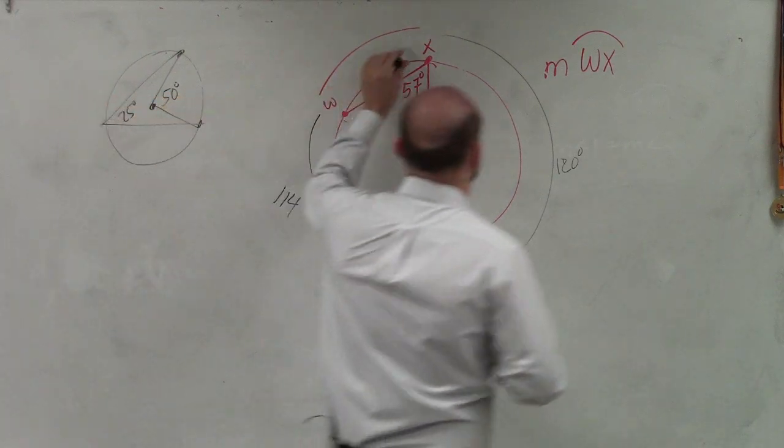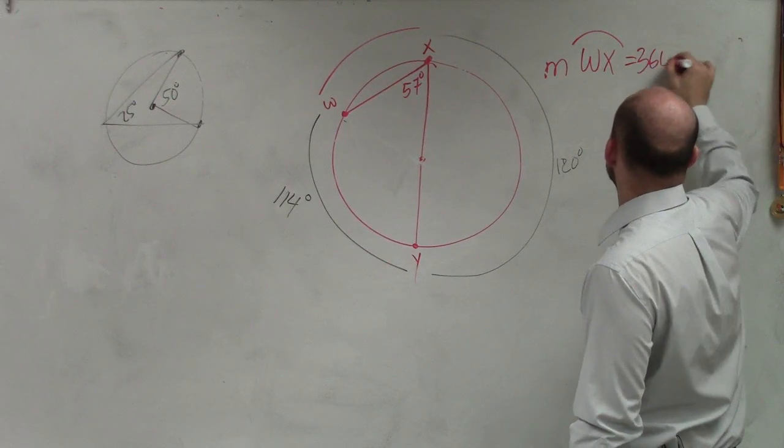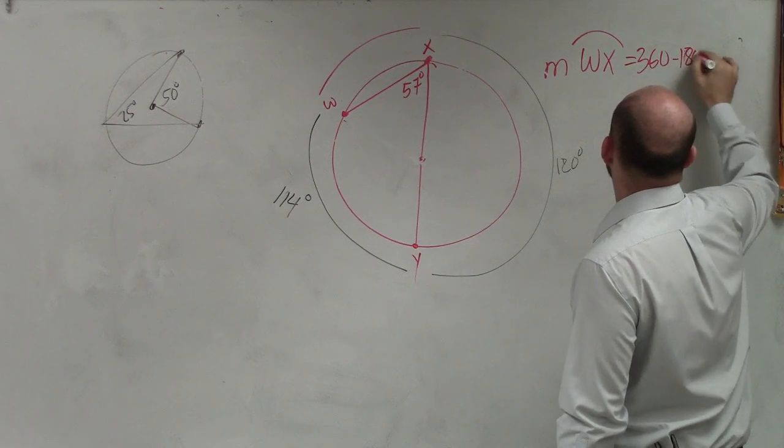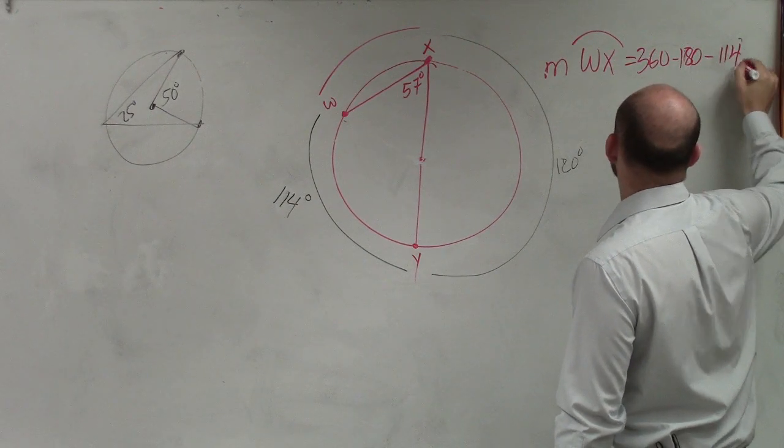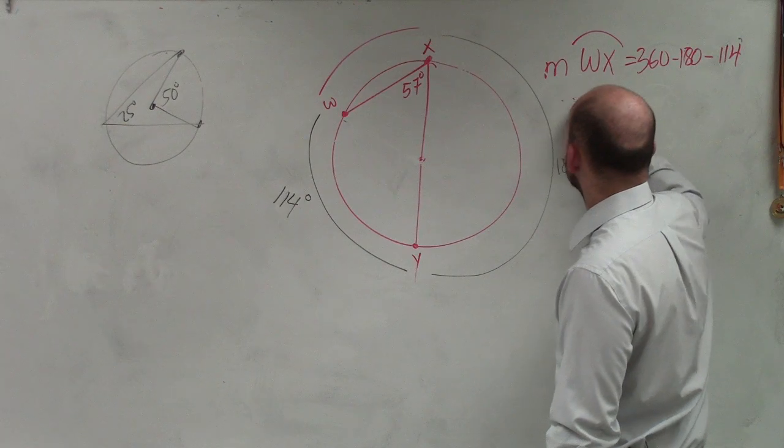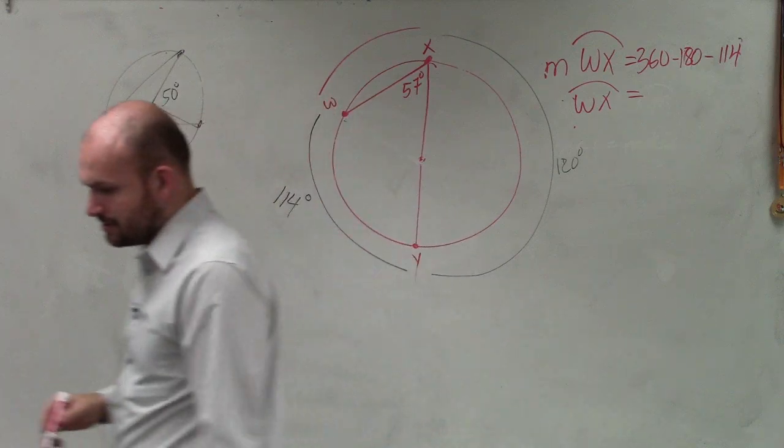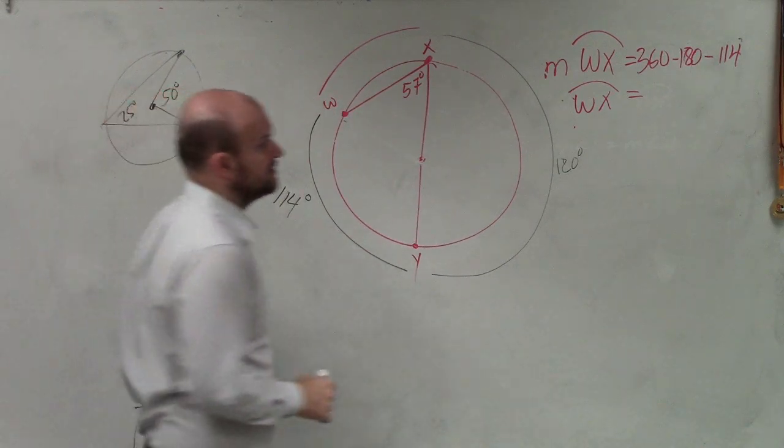So to find wx, all I simply need to do is do 360 minus 180 minus 114. So therefore, wx is going to equal 66 degrees.